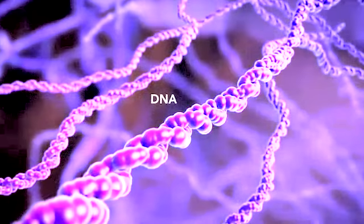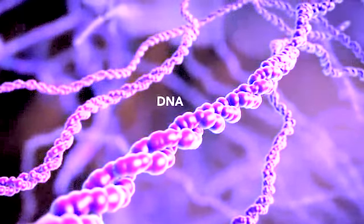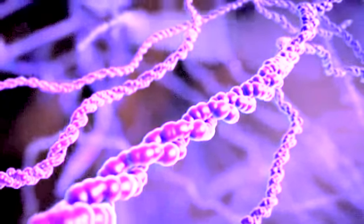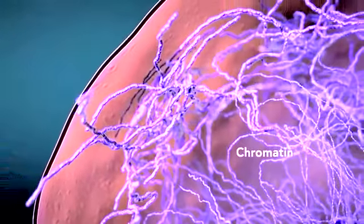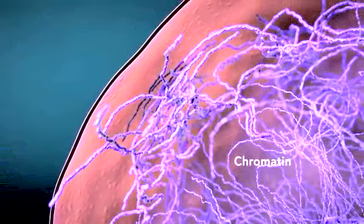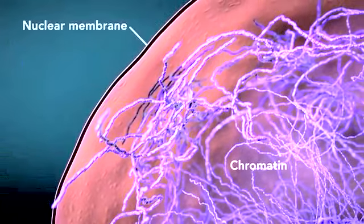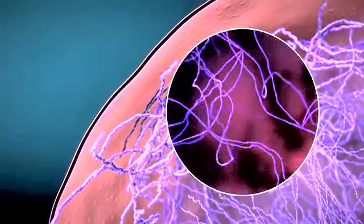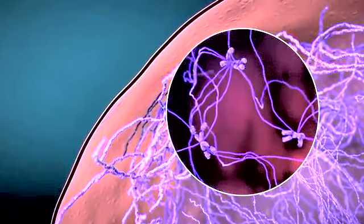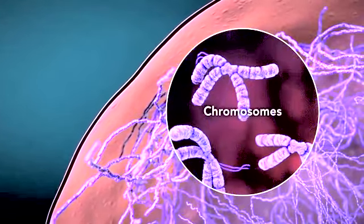The nucleus contains DNA or genetic material. DNA dictates what the cell is going to do and how it's going to do it. Chromatin is the tangled spread out form of DNA found inside the nuclear membrane. When a cell is ready to divide, DNA condenses into structures known as chromosomes.